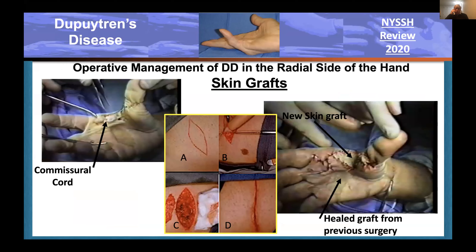Skin grafting is a useful tool, sometimes particularly in recurrent cases where the skin has been damaged so much and the disease is in the skin—you must excise it and replace it with partial-thickness skin grafts. This individual had disease in all five digits of both hands. It was felt that skin grafting prevented recurrence—it does retard recurrence, but it doesn't prevent it completely. One of my London colleagues had an excellent picture of a giant recurrent cord under a beautiful big skin graft.